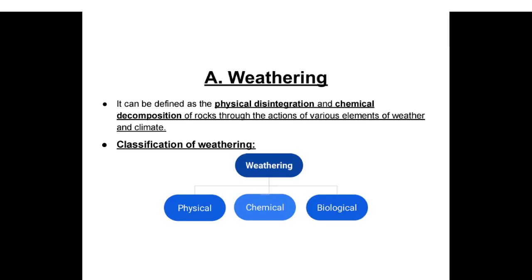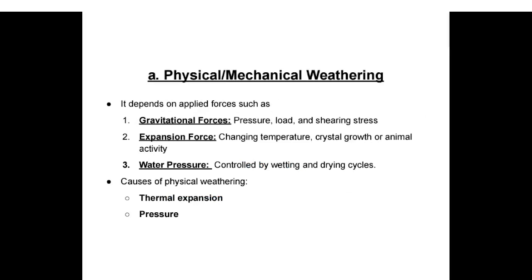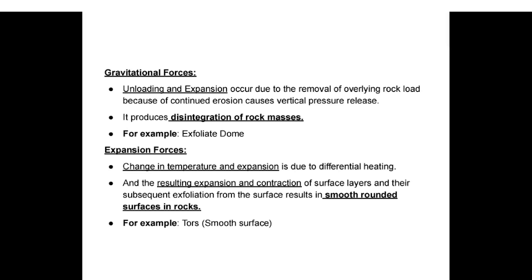Weathering is classified into three types: physical, chemical, and biological. Physical or mechanical weathering depends on applied forces such as gravitational force, pressure load, shearing stress, expansion force, changing temperature, crystal growth, animal activity, and water pressure controlled by wetting and drying cycles. Causes of physical weathering include thermal expansion, pressure, and gravitational forces. Unloading expansion occurs due to removal of overlying rock load because of continued erosion, causing vertical pressure release and disintegration of rock masses — for example, exfoliation domes. Changes in temperature cause differential heating and expansion of surface layers, resulting in smooth rounded rock surfaces.